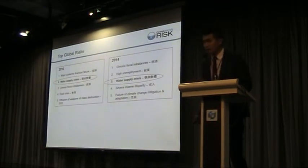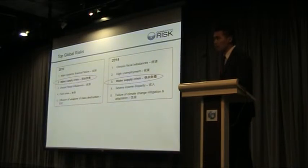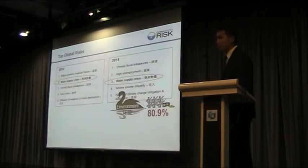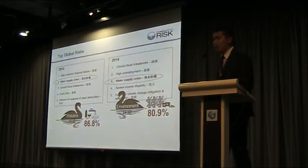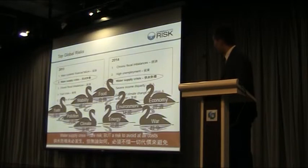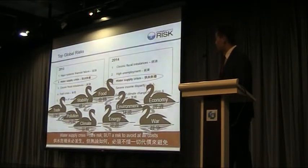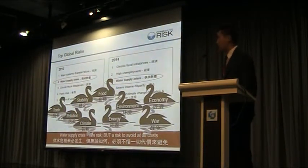Over the past two years, water supply crisis has been listed as a top global risk according to the World Economic Forum. And according to a recent national survey, 81% of people are deeply concerned about the environment in China and 87% are highly concerned over drinking water and food safety. Water issues are not only about pollution and the environment — they are also related to food, energy, and regional security. So it's not a surprise that the government declared war on pollution, because water supply crisis is a real risk.